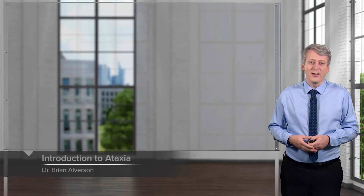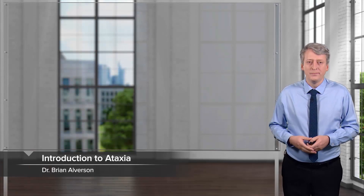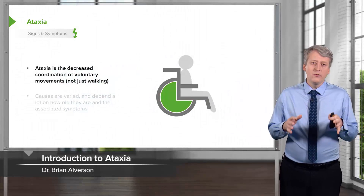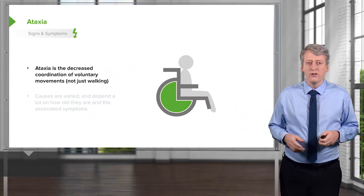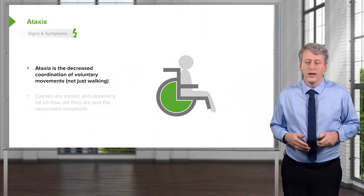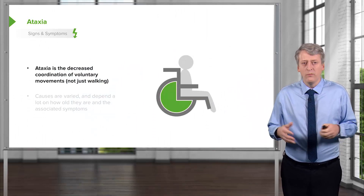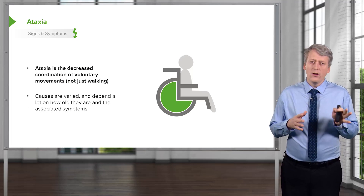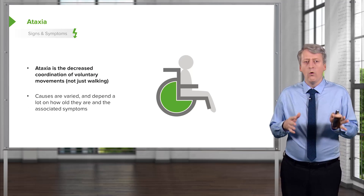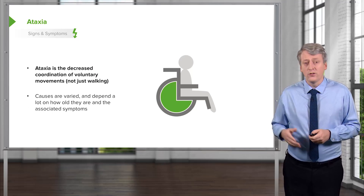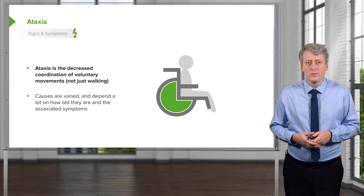In this lecture, we will discuss ataxia in children. Ataxia is the decreased coordination of voluntary movements, not just walking, but really any movement in children. Causes are varied and dependent a lot on how old the child is and the associated symptoms.